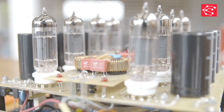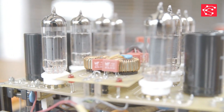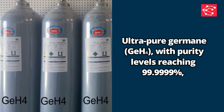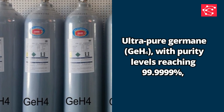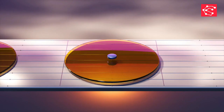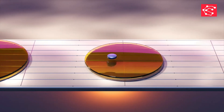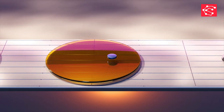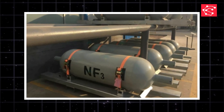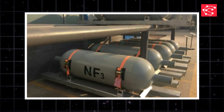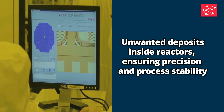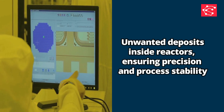Next, we have electronic specialty gases, which are essential in deposition and etching processes. Ultra-pure germane, with purity levels reaching 99.9999%, is a key precursor for germanium-based epitaxial layers and advanced channel materials. Similarly, NF3 etching gas is widely used in cleaning and removing unwanted deposits inside reactors, ensuring precision and process stability.